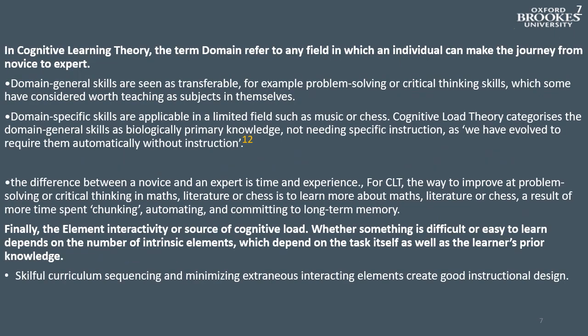General versus specific refers to any field in which an individual can make the journey from novice to expert. Domain general skills are seen as transferable — for example, problem solving or critical thinking — which some have considered worth teaching as subjects in themselves. Domain specific skills are applicable in a limited field such as music or chess. CLT categorises domain general skills as biologically primary knowledge, not needing specific instruction, as we have evolved to acquire them automatically. In any biologically secondary area, the difference between a novice and an expert is time and experience, creating differential knowledge held in long-term memory. Thus, for CLT, the way to get better at problem solving in maths, literature or chess is to learn more about maths, literature or chess — a result of more time spent chunking, automating and committing to long-term memory.